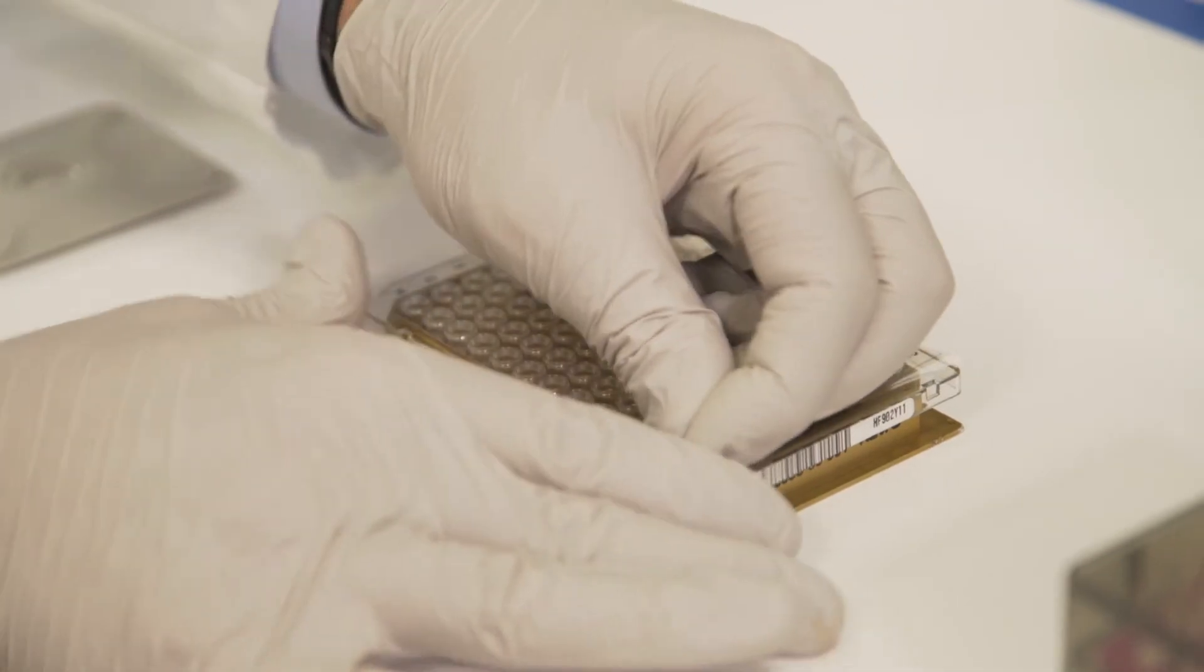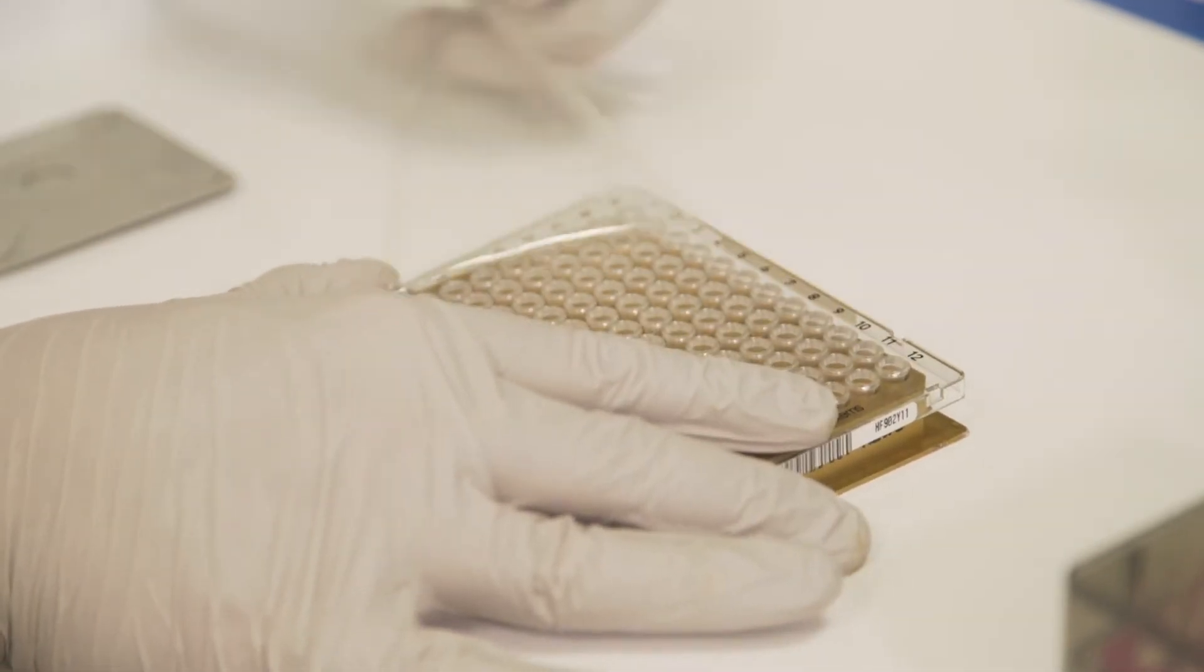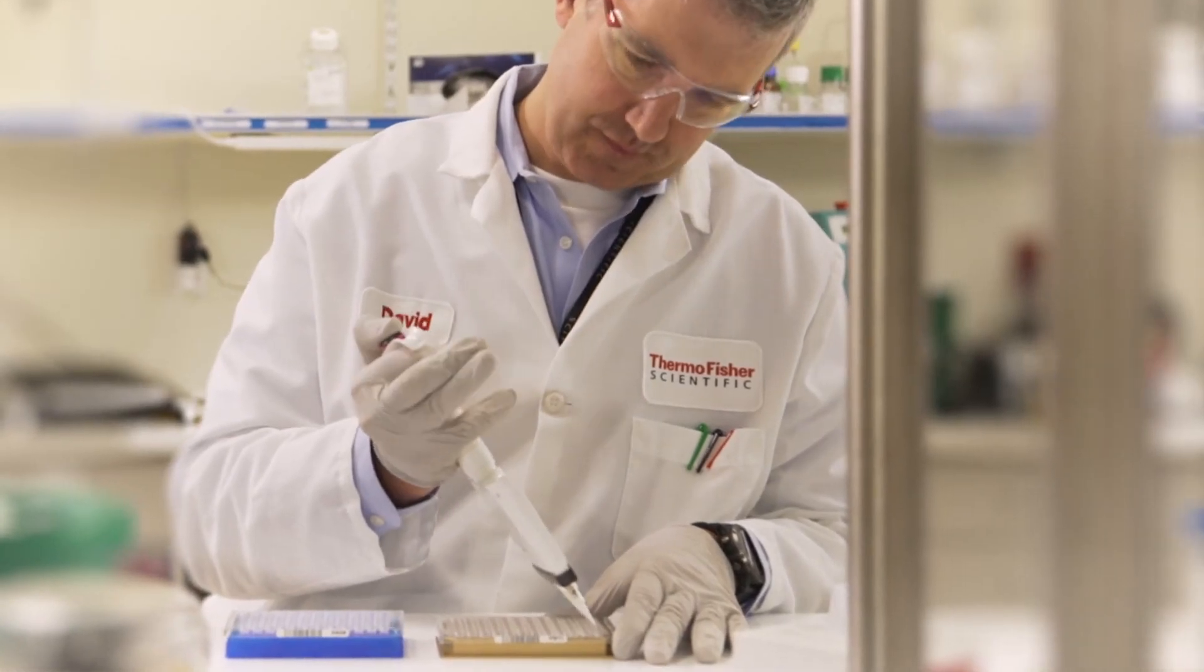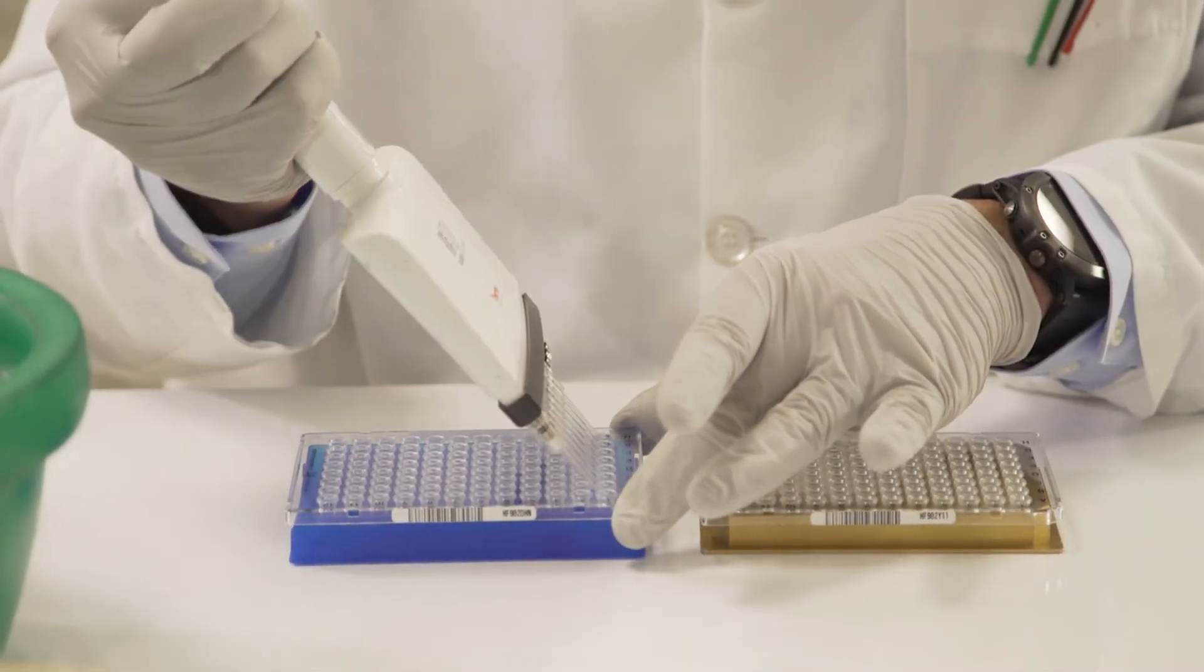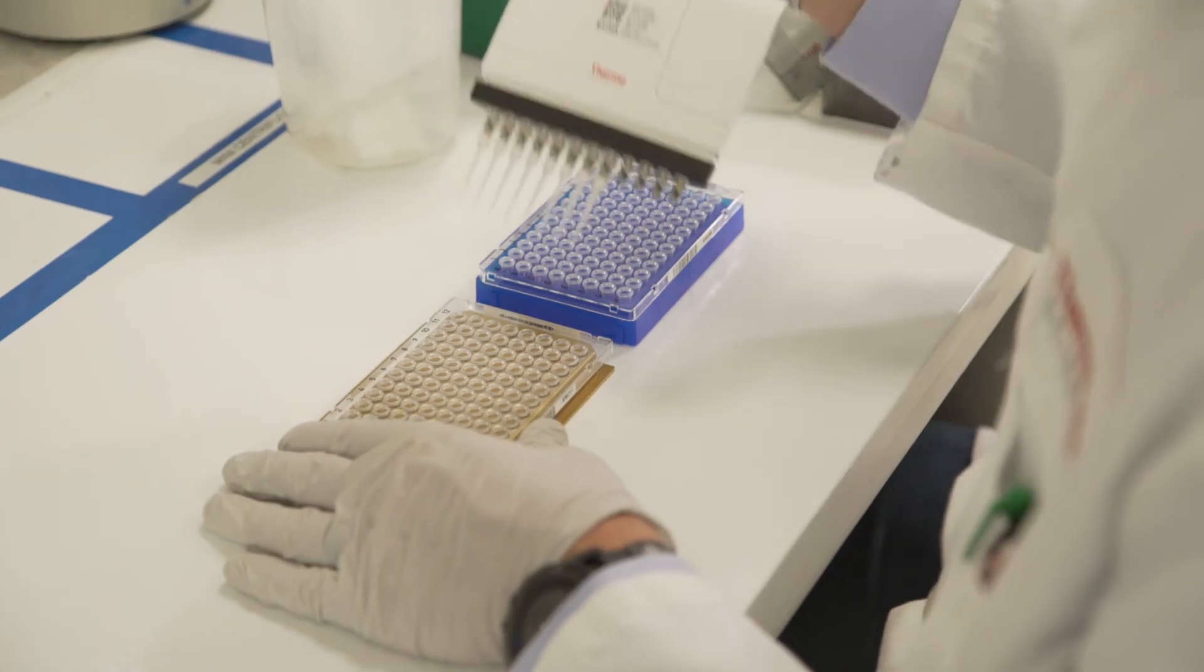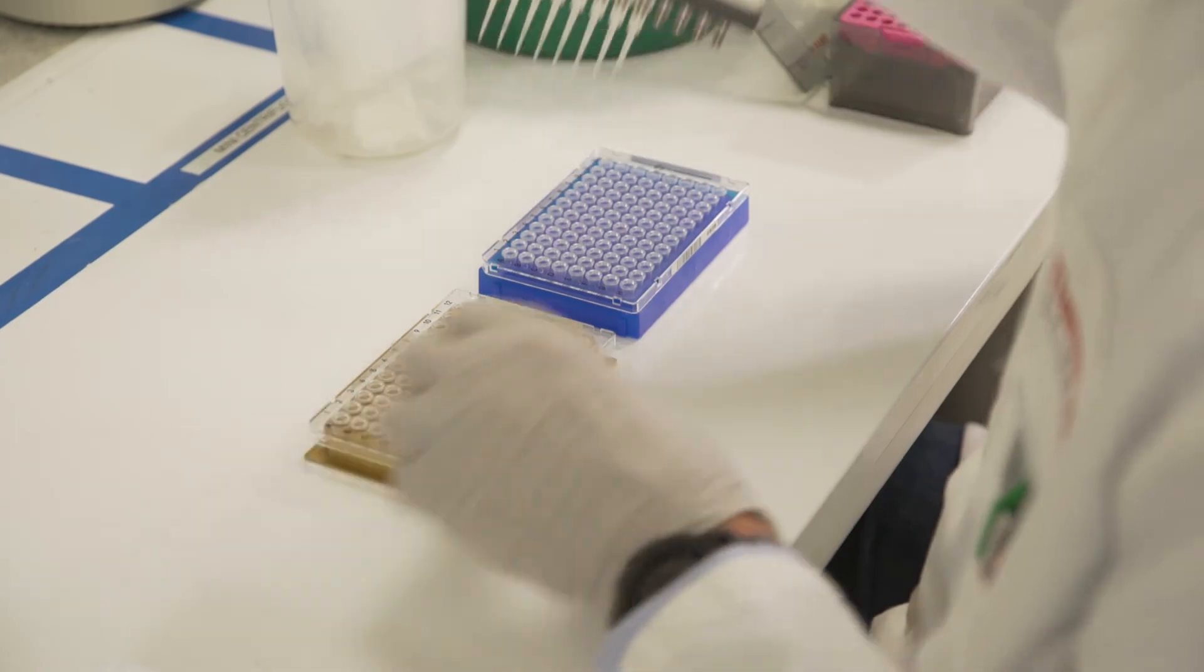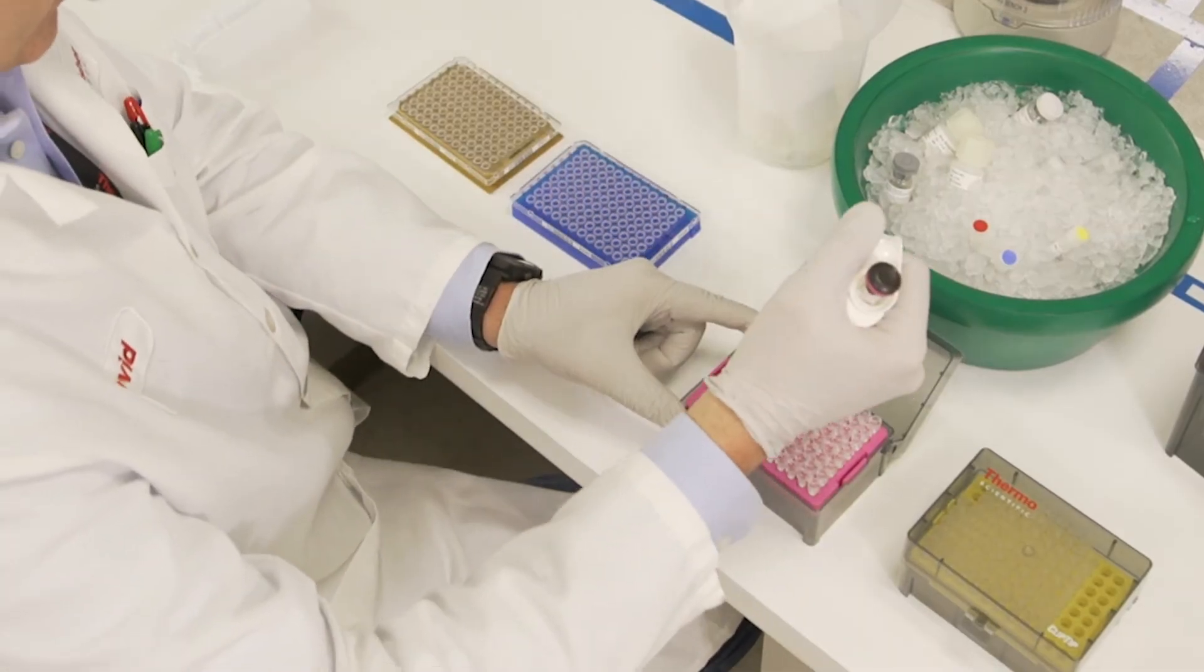You're now ready to transfer the solutions from your working plate to the PCR assay plate. Using a multi-channel pipette, add five microliters of the antibody conjugate mixture to each well. Then add five microliters of either your diluted standard or the samples. Remember to use fresh tips between each transfer.